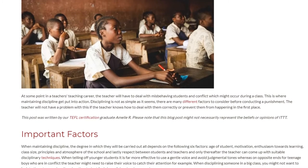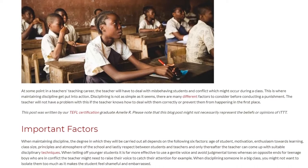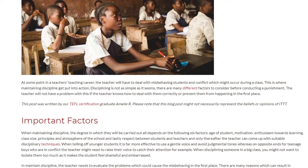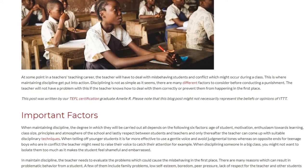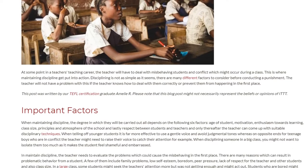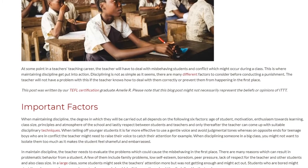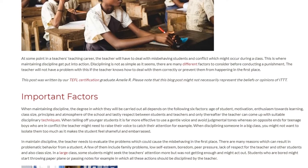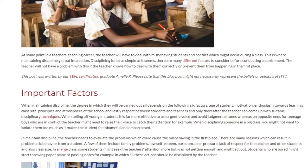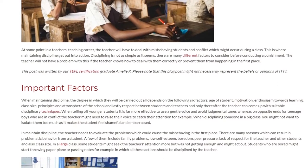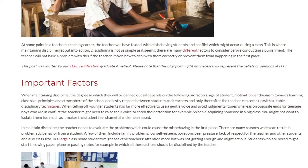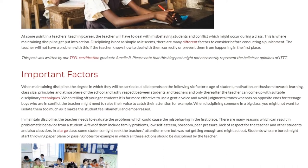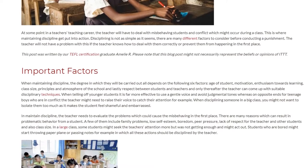When maintaining discipline, the degree to which it is carried out depends on six key factors: the age of the student, motivation, enthusiasm towards learning, class size, principles and atmosphere of the school, and respect between students and teachers. Only thereafter can the teacher come up with suitable disciplinary techniques. For example, when telling off younger students, it is far more effective to use a gentle voice and avoid judgmental tones, whereas with teenage boys in conflict, the teacher might need to raise their voice to catch their attention.